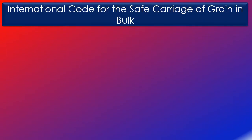The international grain code applies to ships regardless of size, including those of less than 500 gross tonnage engaged in the carriage of grain in bulk and to which part C of SOLAS chapter 6 applies. The purpose of the code is to provide an international standard for the safe carriage of grain in bulk.